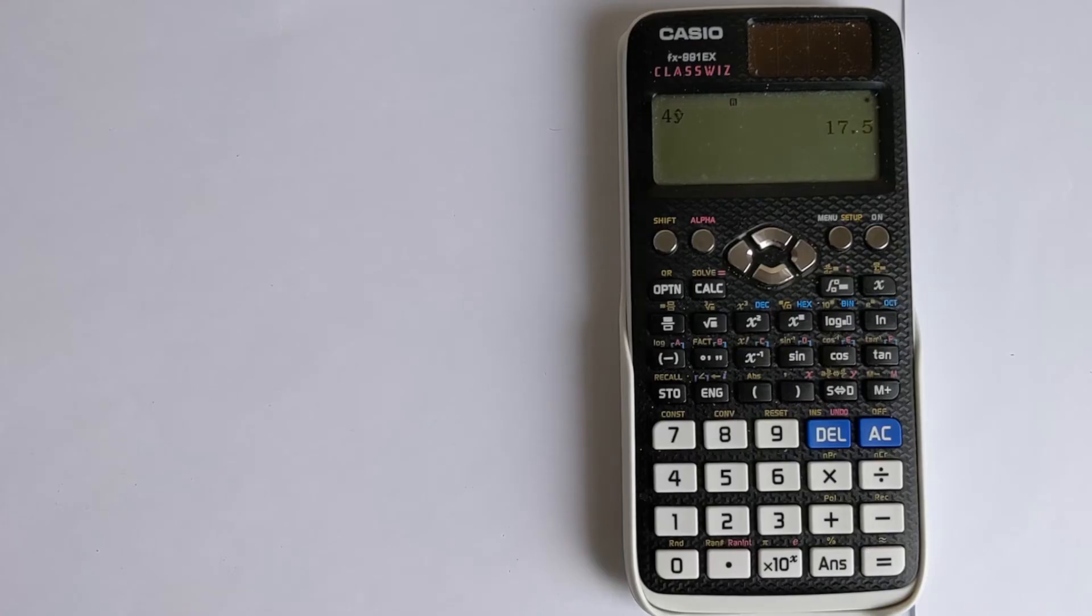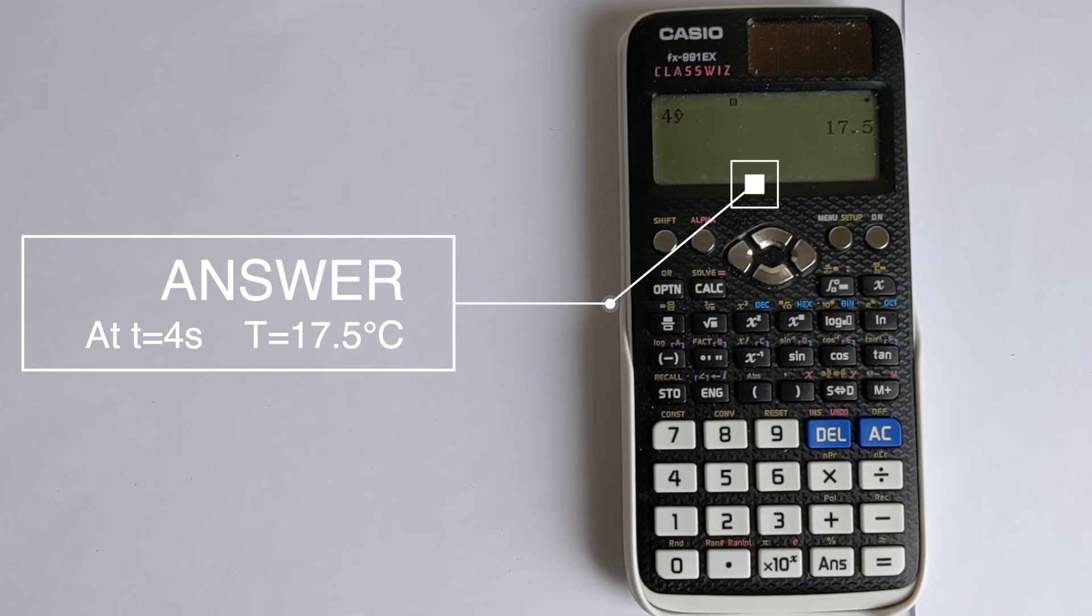And you can see immediately that halfway between 15 and 20 is 17.5, because 4 is halfway between 3 and 5. So it's obvious that that's the right answer.